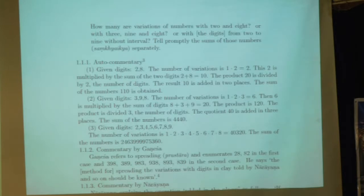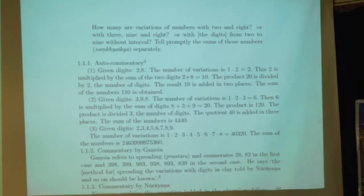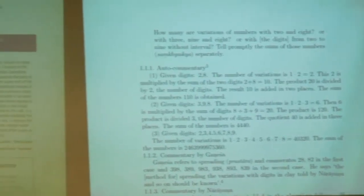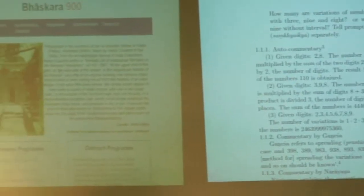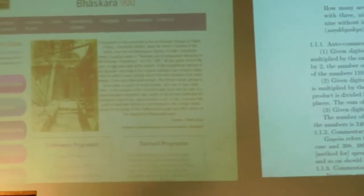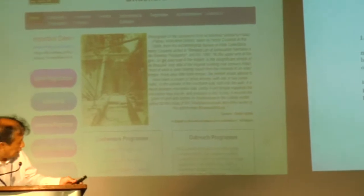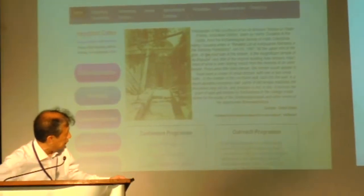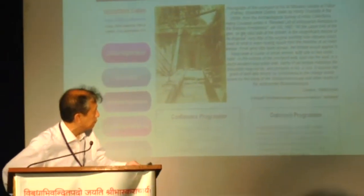And the third case: the number of variations is 1 × 2 × 3 × 4 × ... and so on, giving 40,320. The sum of the numbers is the corresponding amount.